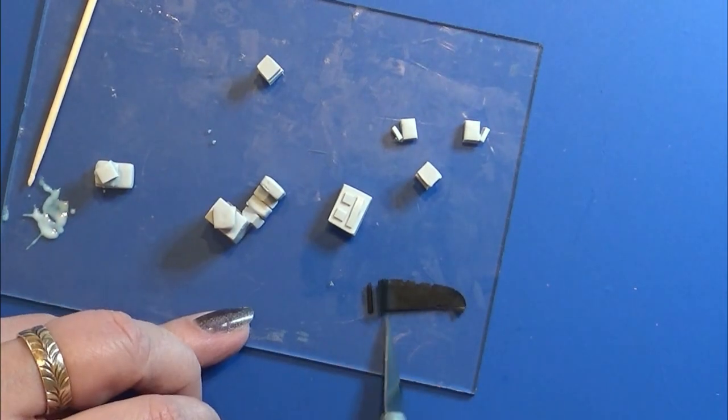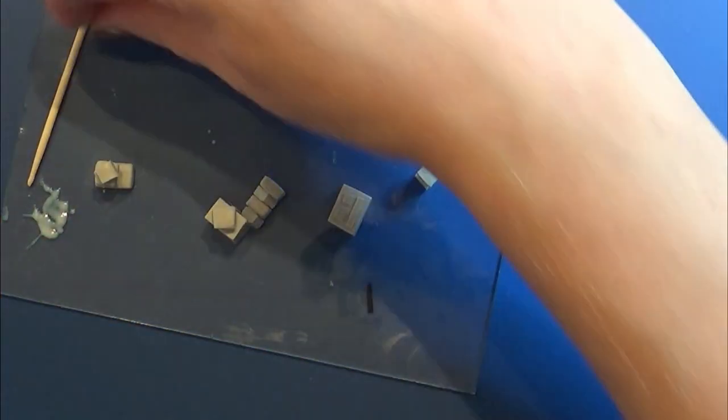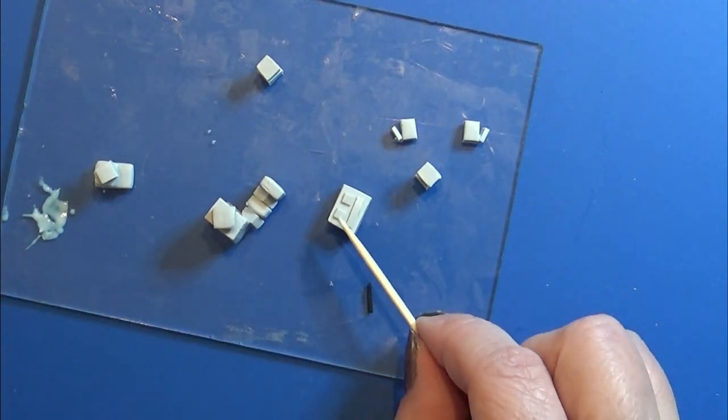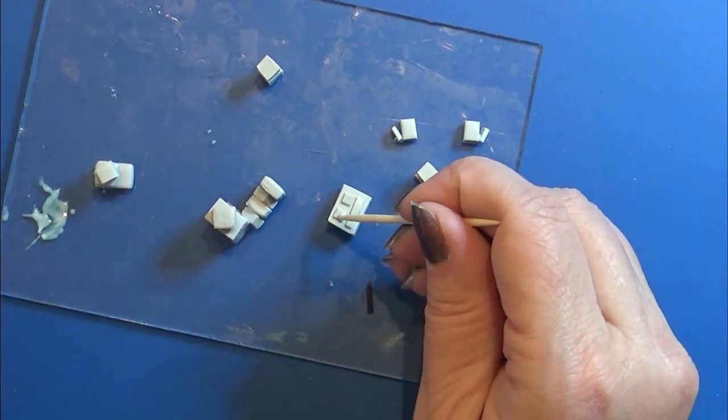Then I rolled out a very thin piece of black clay on my pasta machine in the thinnest setting, and I used that for a tiny dot in the eye.